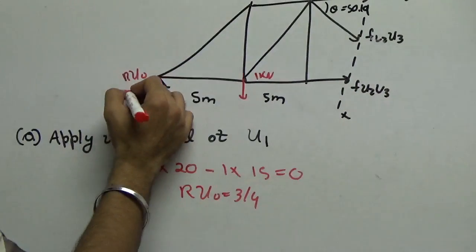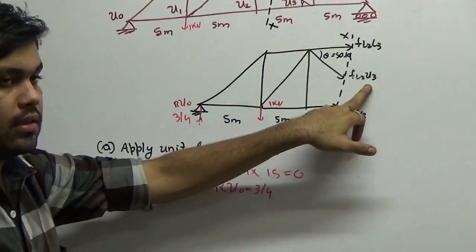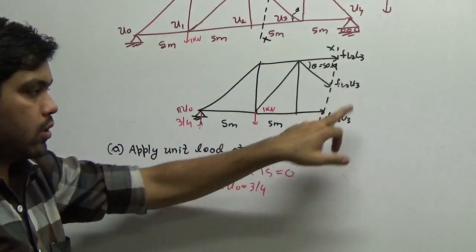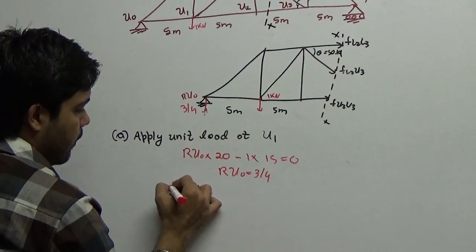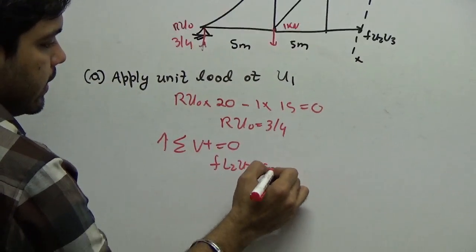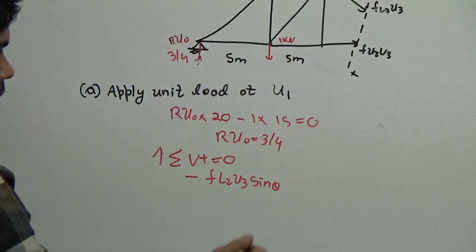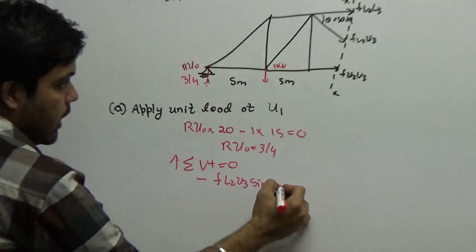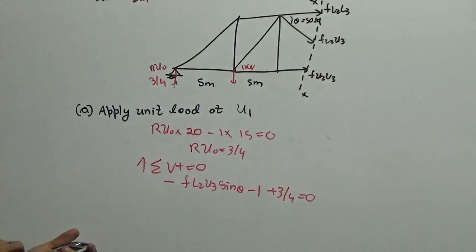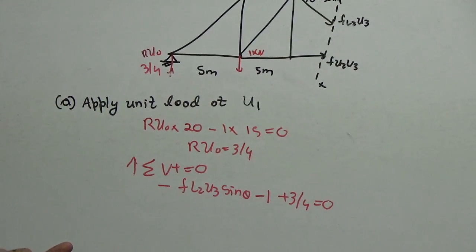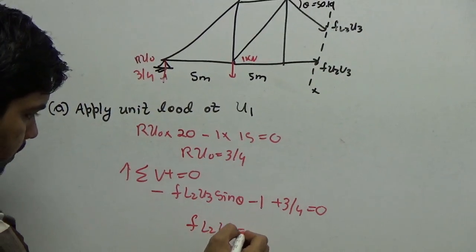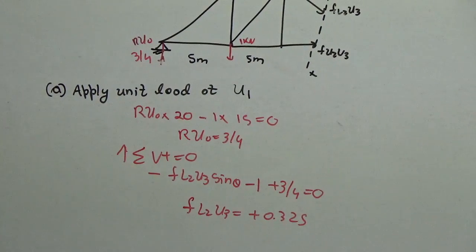Now, if I know this value, now what I'll do is, I'll take the summation of vertical. Why? Because I'm interested in this first. If I take moment above this joint or this joint, the joint u3, minus becomes 0. I don't want that. So I take this summation of vertical of upward positive equal to 0. I have Fl2u3 sine theta taking downwards. So I'm taking this as negative. What else? This 1 is there. So that is downward minus 1. This is positive. So plus 3 by 4 equal to 0. So this gives me a value of minus 1 plus 3 by 4 divided by sine of 50.19. Please note that this value is Fl2u3 is plus 0.325.